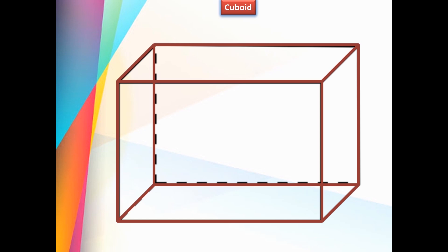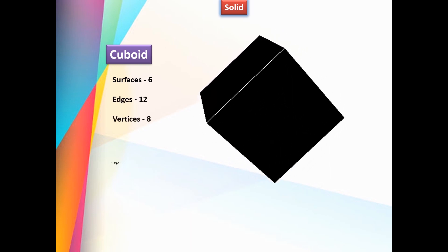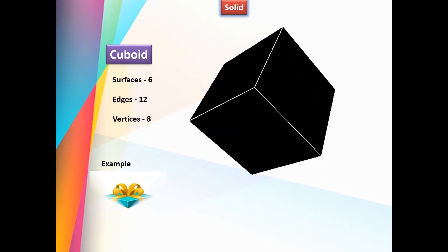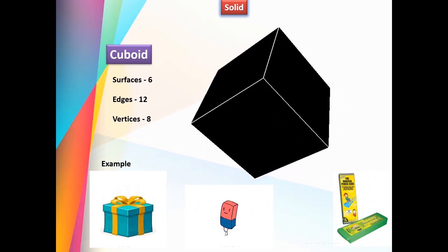Therefore, a cuboid has 6 surfaces, 12 edges, and 8 vertices. Examples: box, eraser, and pencil box.